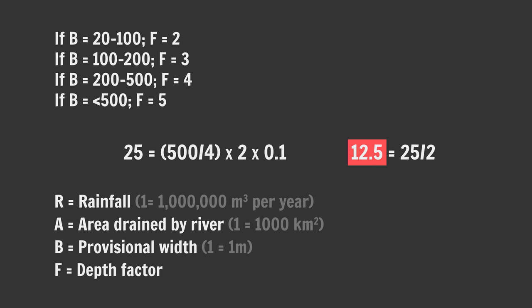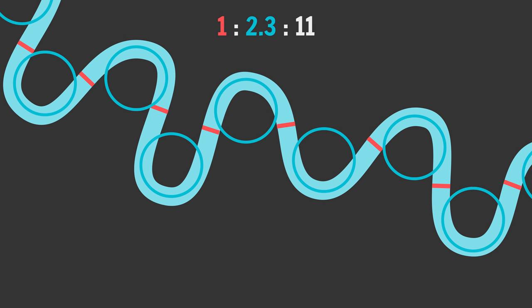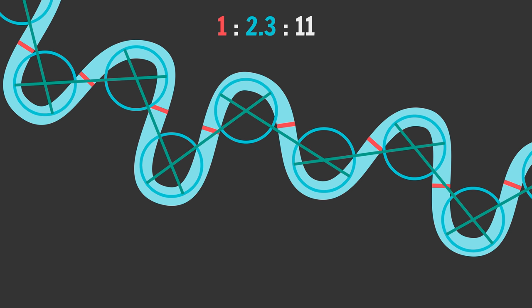Also, rivers don't meander randomly. Turns out, they tend to follow this ratio. That is, if the river is 1 meter wide, the radius of its meander curves will be about 2.3 meters. And the length of its meanders, one S-shaped section of the course, will be about 11 meters. This ratio holds, regardless of river width.